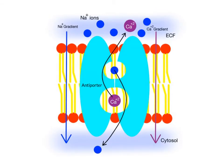If the carrier proteins are moving solutes in opposite directions across the membrane, they are called antiporters, where the prefix anti refers to the opposite directions of transport. This is like a two-lane road where traffic is moving in both directions — one lane of cars going one way and the other lane of cars going the other way.